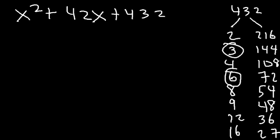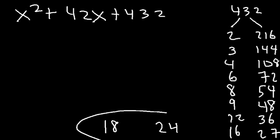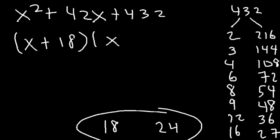Now, 6 times 3 is 18, so we could try 18. 432 divided by 18 is 24. Notice that these two add up to 42. So the answer is going to be x plus 18 times x plus 24.